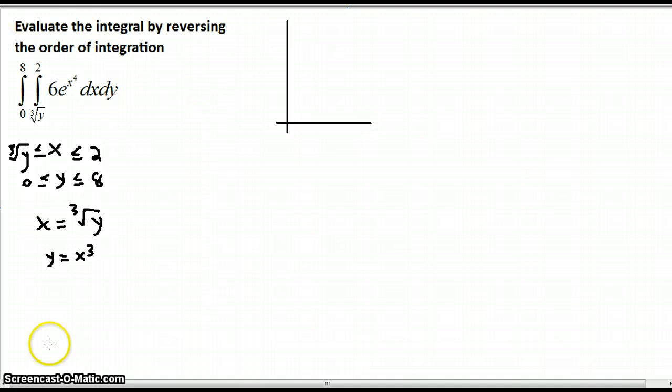y equals x cubed looks like a curve like that and x equals 2 is a vertical line. y equals 0 is the x-axis and y equals 8 just happens to be this point here that they intersect at.